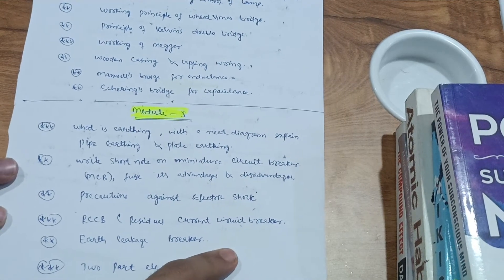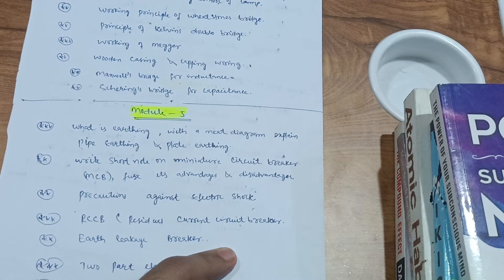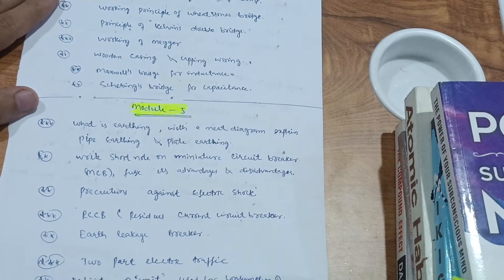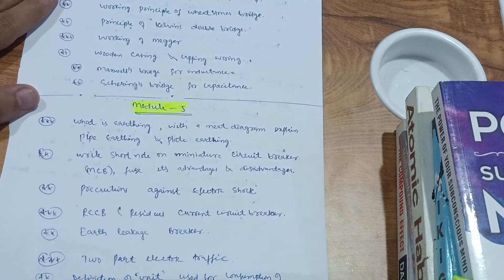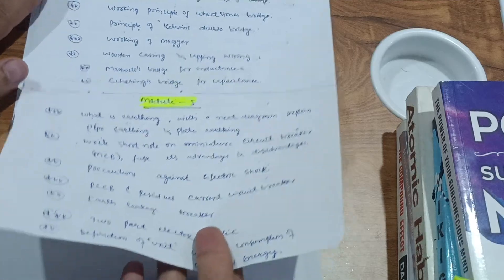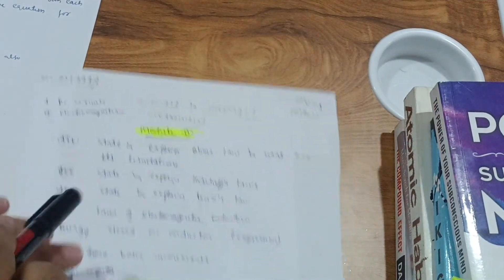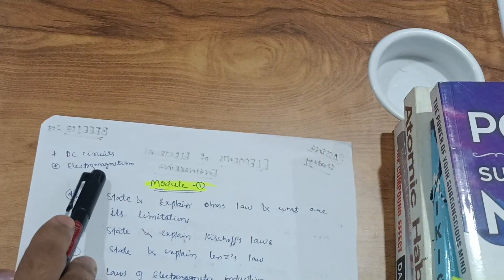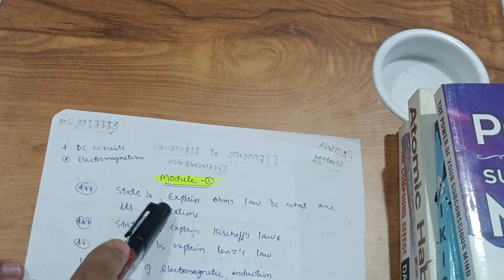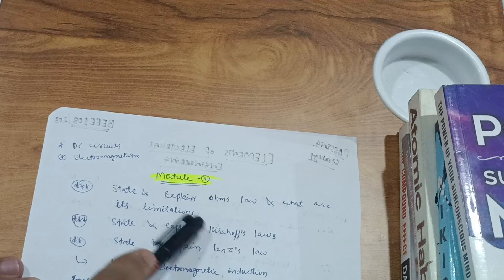As you already know in the VTU examination, problems are somewhat unexpected. So students mostly focus on the theory part. You just go through these three concepts, you will easily get marks, at least 15 marks from this particular module. Then Module 1 comes up in which you have to deal with the DC circuits and electromagnetism.